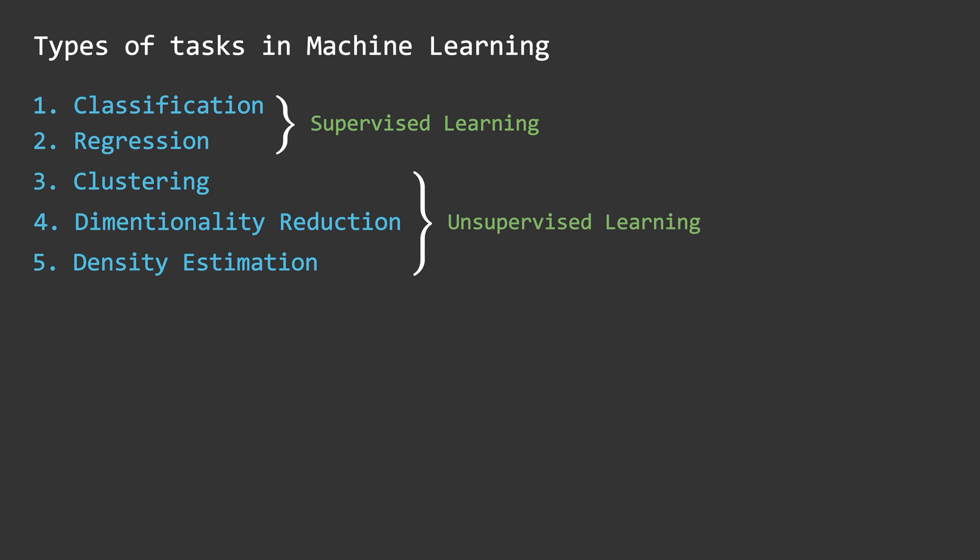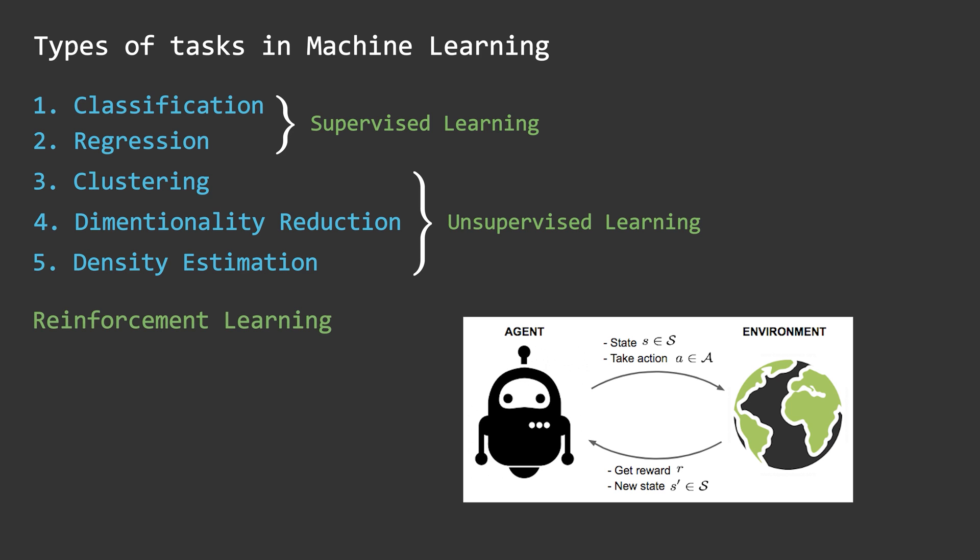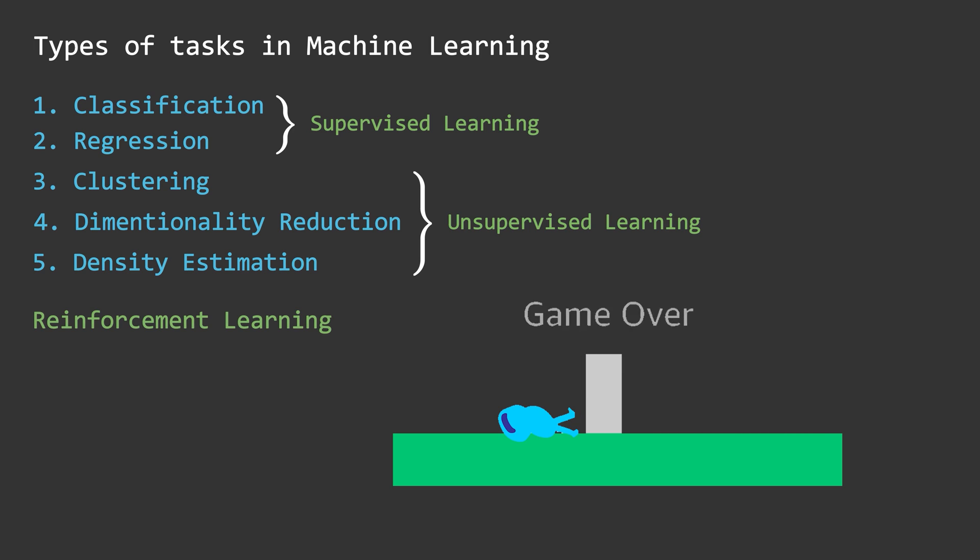Yet another broad machine learning paradigm involves identifying the action that will result in the maximum reward under given conditions. For example, driverless cars, auto-piloting drones, robotic vacuum cleaners, and game-playing bots are all agents that need to decide on the next steps that will lead to the best outcomes in their particular scenario. This is the field of reinforcement learning.